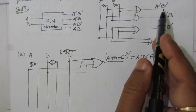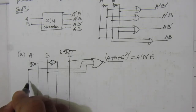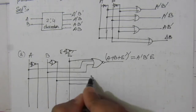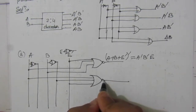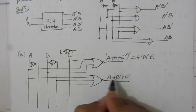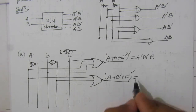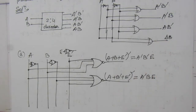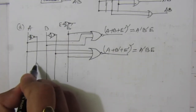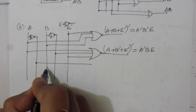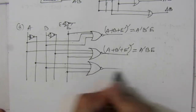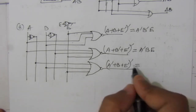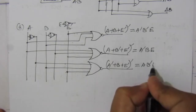This resembles the first output term. Next, to find A̅B, we take a line from A, a line from B̅, and a line from Ē into a NOR gate. This gives (A + B̅ + Ē)'. By De Morgan's theorem, this equals A̅BE — which is nothing but A̅B. For the third output AB̅, we take a line from A̅, a line from B, and a line from Ē into a NOR gate, giving (A̅ + B + Ē)'. By De Morgan's theorem, this equals AB̅E.